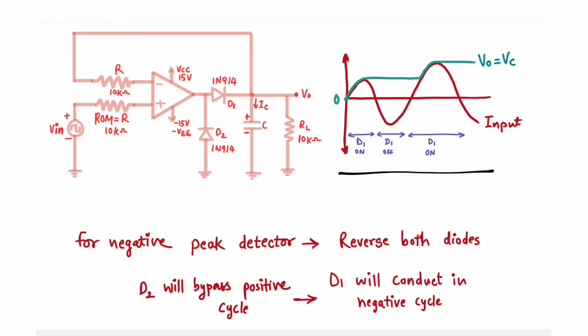Now let's look at sinusoidal signals. The red waveform is the sine wave input. The working remains the same: in the positive half cycle, D1 will be on and the capacitor charges towards the maximum peak voltage. If this is 5 volt, the capacitor will have 5 volt across it. In the negative half cycle, D1 is off and the capacitor holds its charge — output is still 5 volt. In the next positive half cycle, if the peak voltage is 10 volt, the capacitor charges to 10 volt, and you get 10 volt at output.